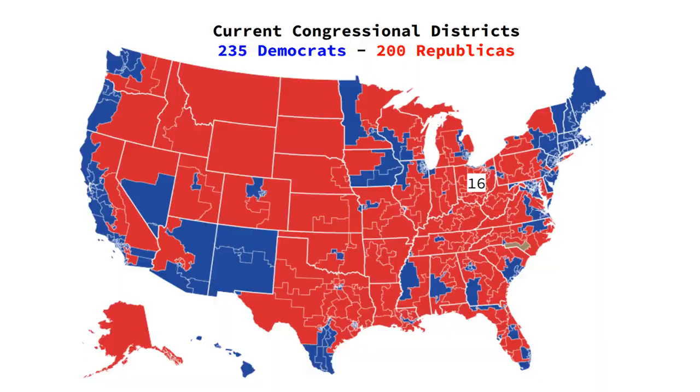This red and blue map shows us each congressional district in the United States — there are 435 of them. Each district represents between 700,000 and 1 million people, and each of those people have one person representing them in the U.S. House of Representatives. The number 435 has been set since 1929, but obviously our population has grown. Ohio gets 16 representatives, California gets 53, and Montana only gets one member in the House.